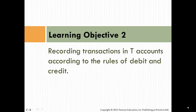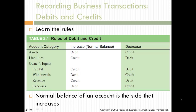Learning objective two is recording transactions in T-accounts. T-accounts make it very simple to do accounting. I've been doing accounting for 20-plus years and when I get stuck and can't figure out a transaction, I pull out my T-account and work through it. It's just the way accountants think. You need to remember the normal balance of an account — this is a great thing to put on a flash card.